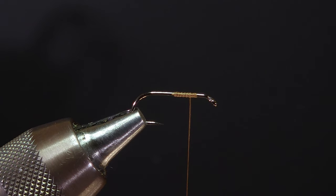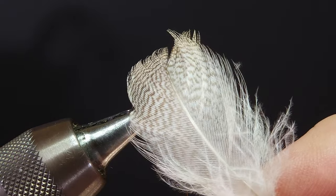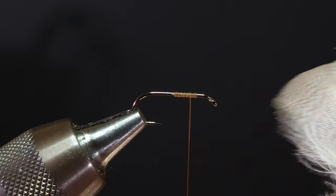The material we'll use for the wings is a single mallard flank feather like this. But before I mount the feather to the hook we'll need to do some prep work to the feather itself.